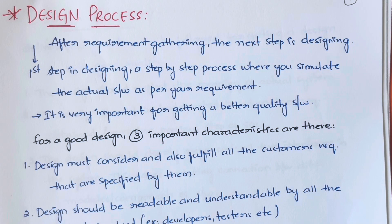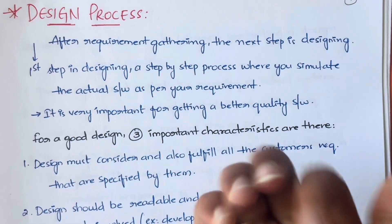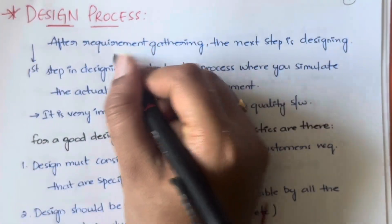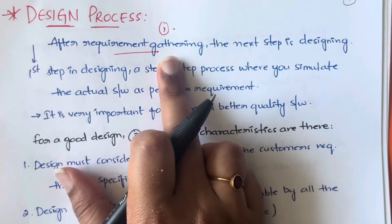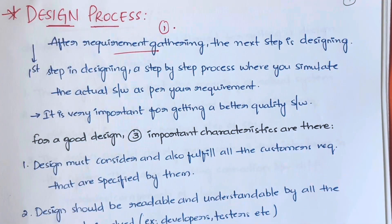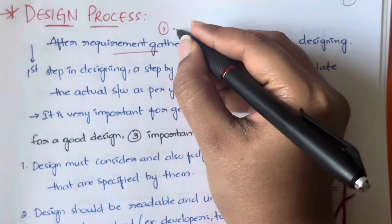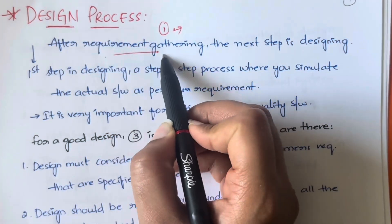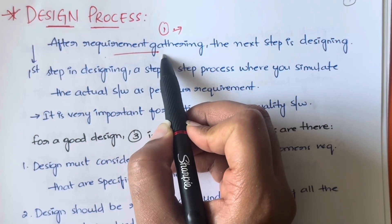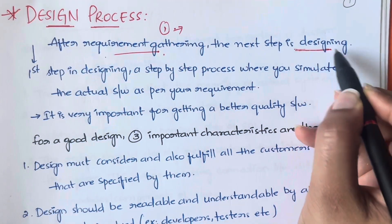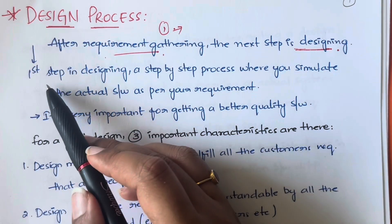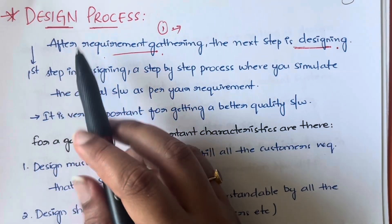In SDLC, the first step is requirement gathering. Once you are done with gathering all the requirements, your next step would be designing or planning. So once you are done with requirement gathering, you would start designing the system.